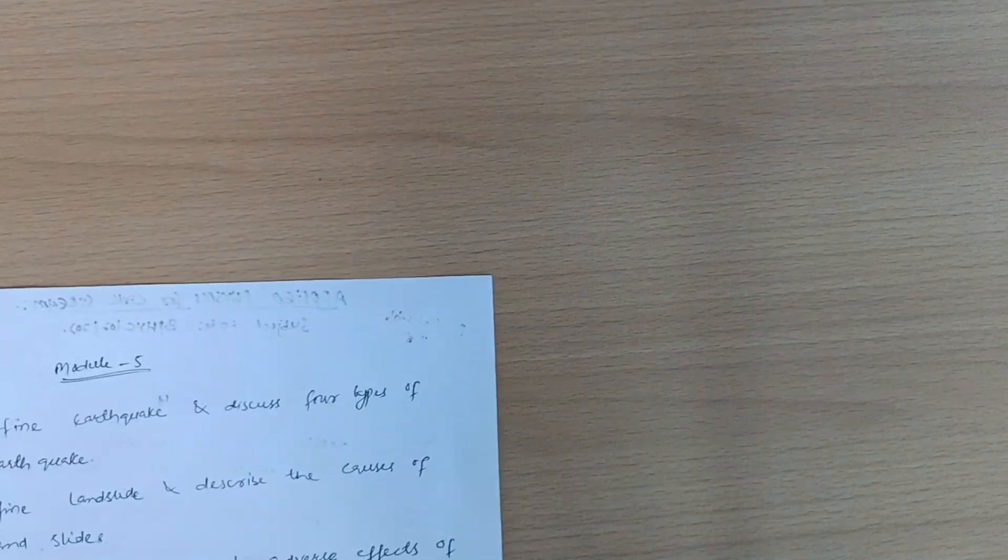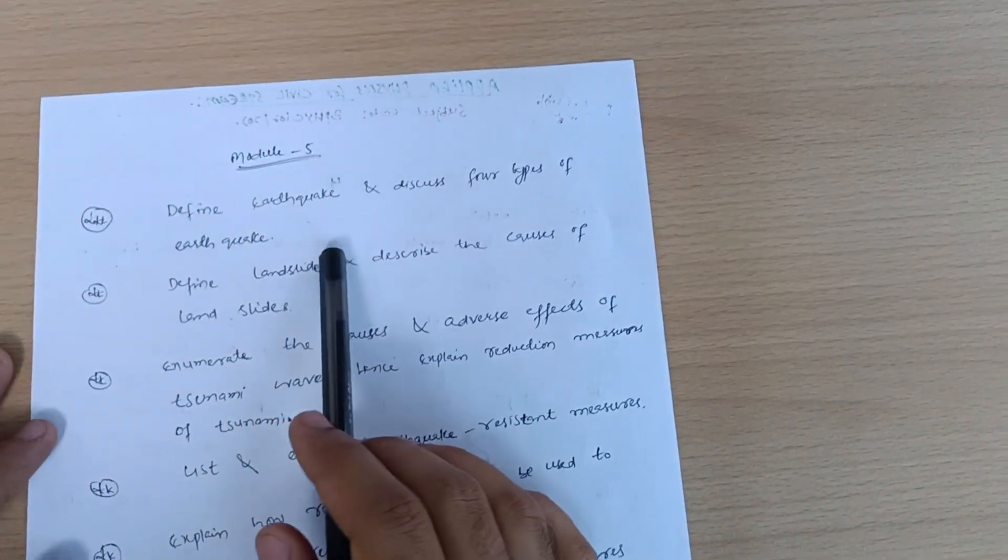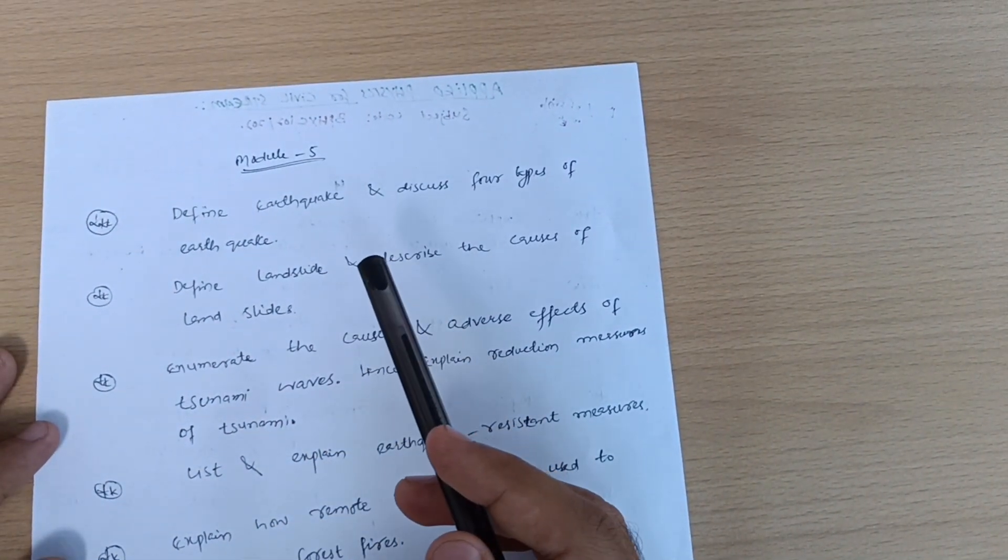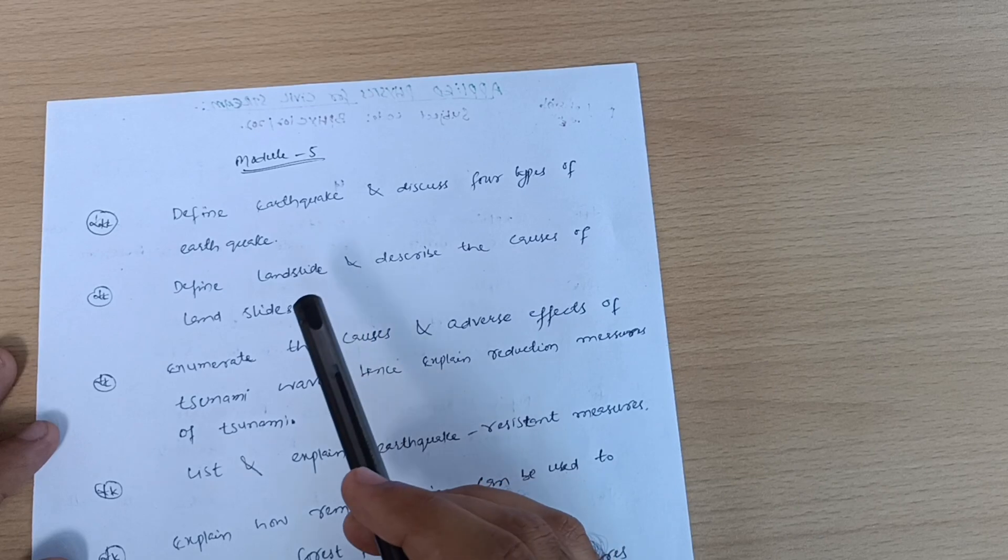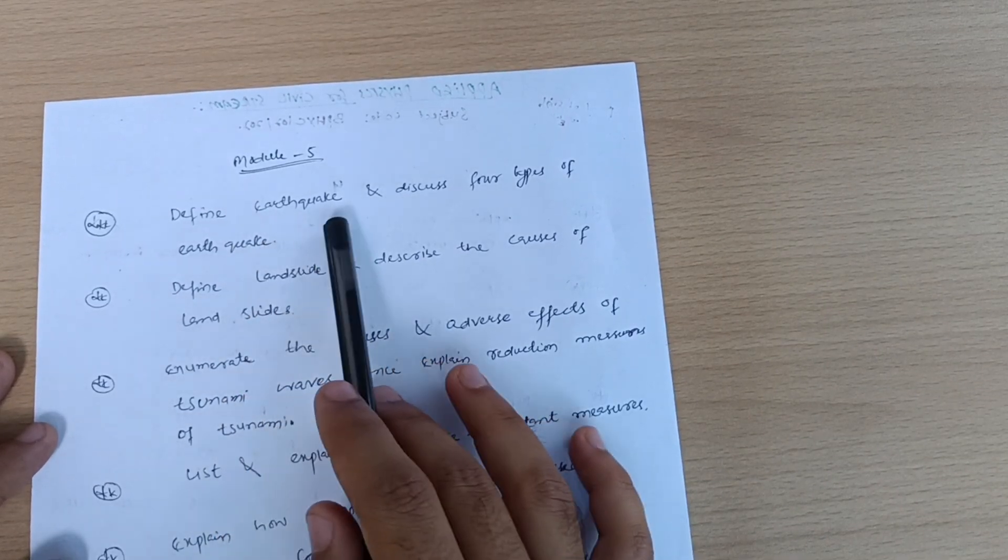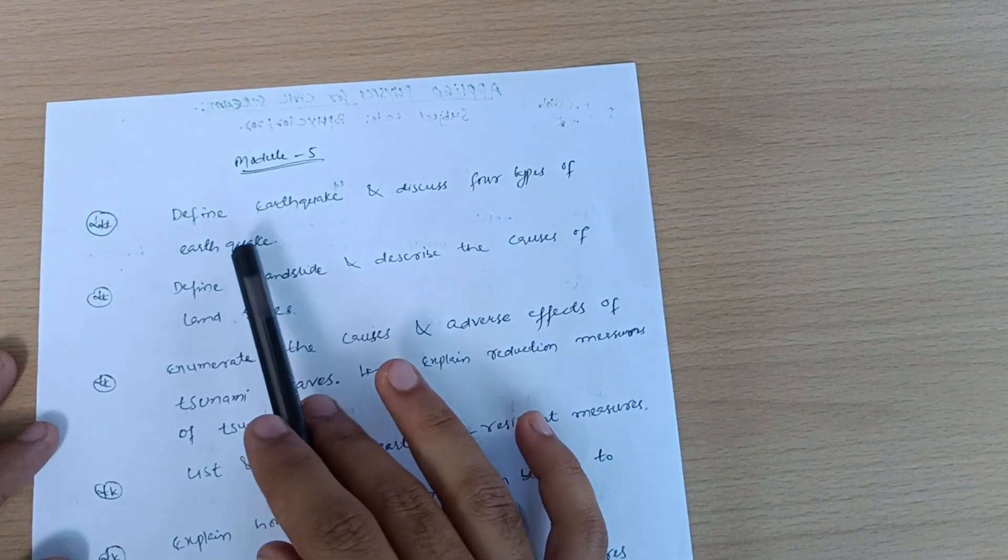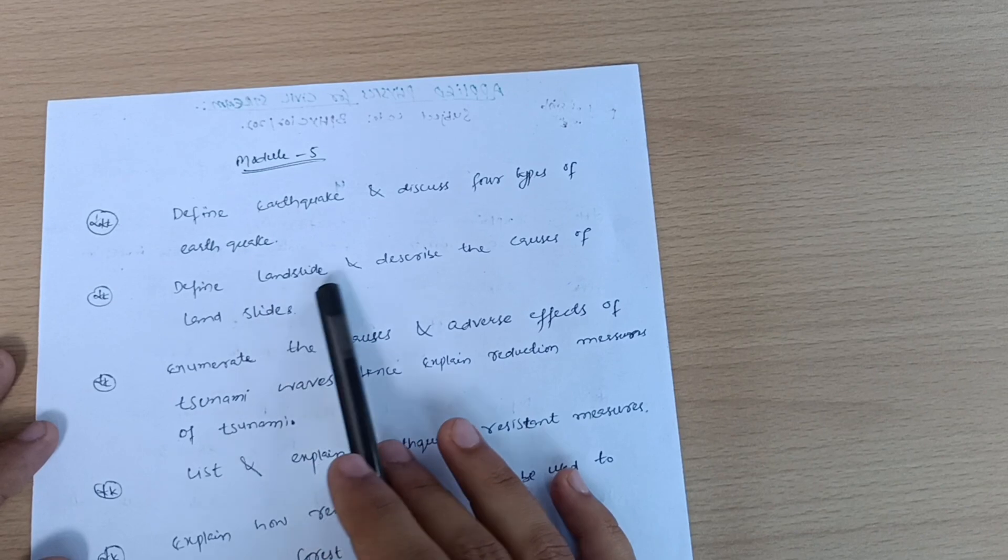Now what is fifth? This is the theoretical part. Some numericals are also there, but you should focus much more on theoretical part over there. Define earthquake and discuss four types of earthquake.